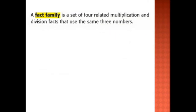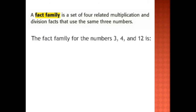Fact family. What is a fact family? You know a family as your father, mother, sister, and brother. There is also a family for multiplication and division — multiplication and division are related. A fact family is a set of four related multiplication and division facts that use the same three numbers. As you see here, the fact family for the numbers 3, 4, and 12 — we know that 3, 4, and 12 are related numbers.